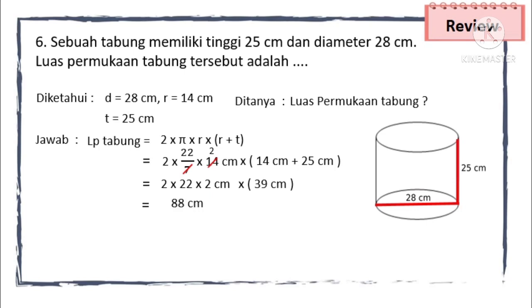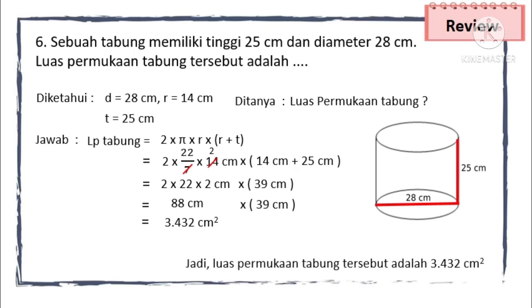88 cm dikali 39 cm. Hasil akhirnya 3.432 cm persegi. Jadi, luas permukaan tabung tersebut adalah 3.432 cm persegi.